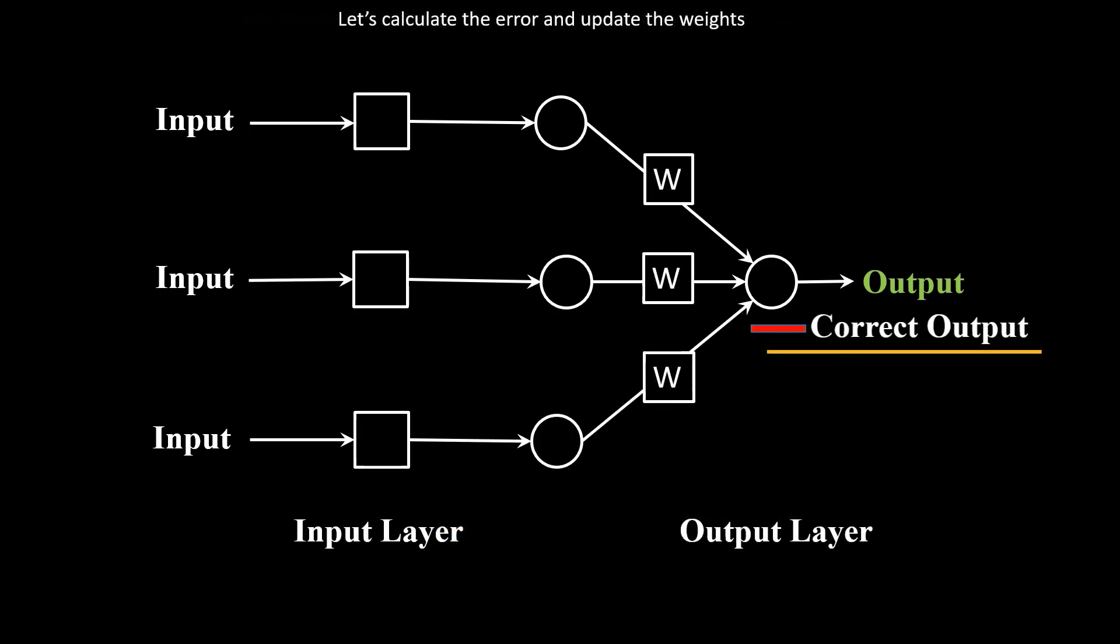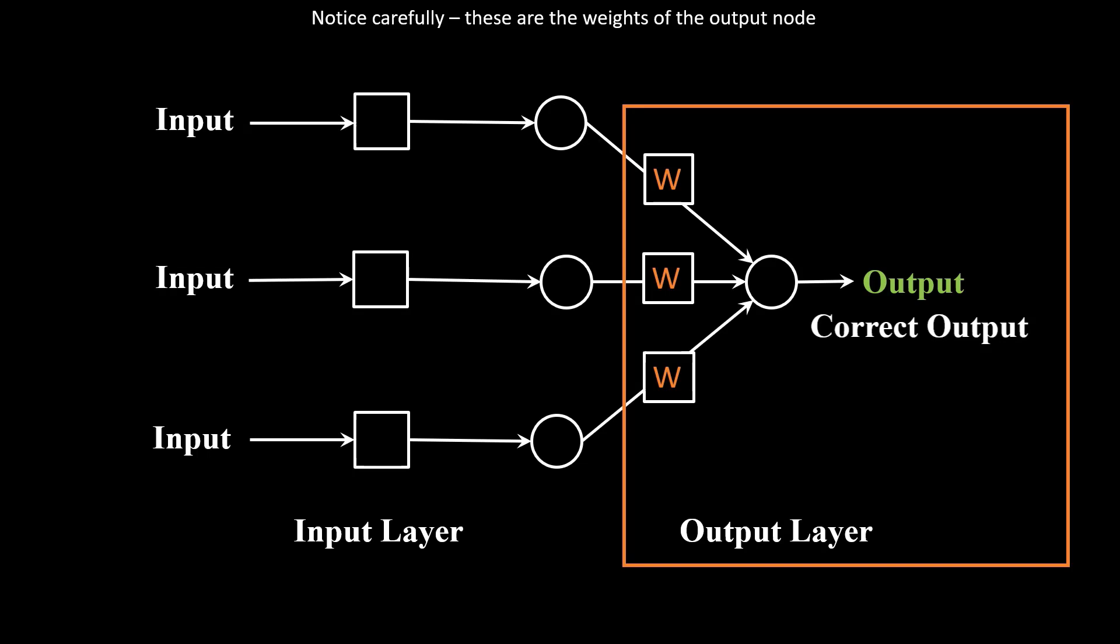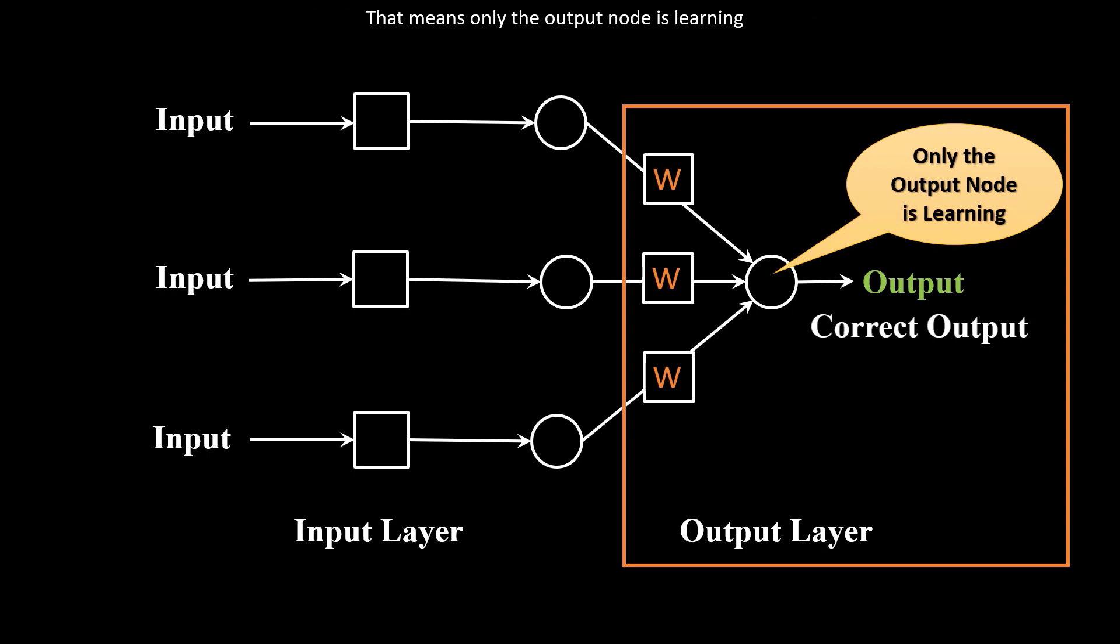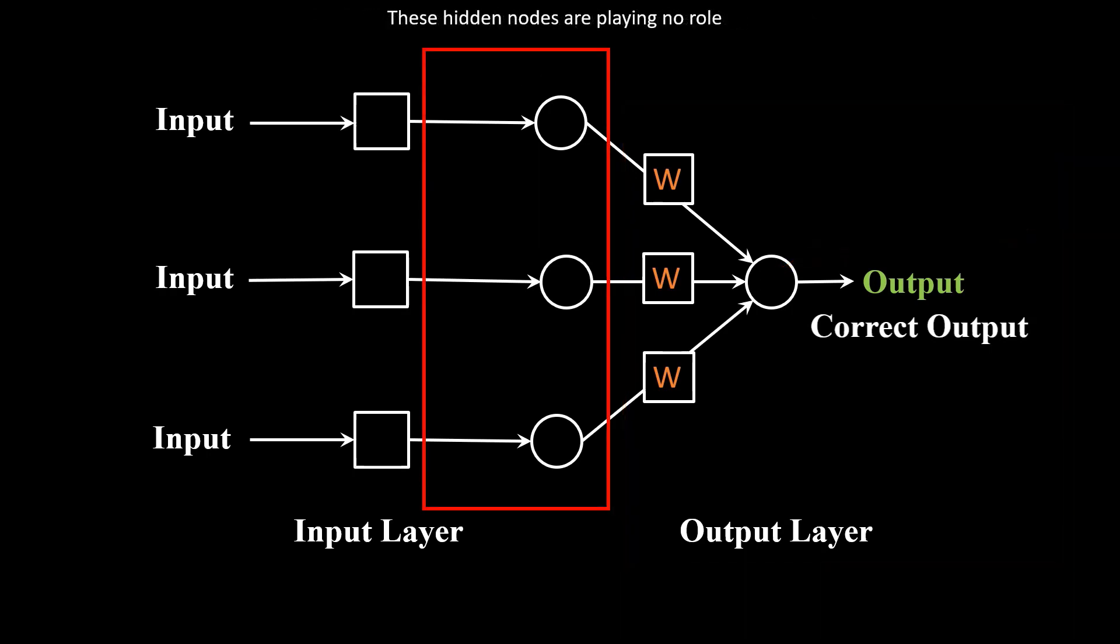Let's calculate the error and update the weights. Notice carefully, these are the weights of the output node. That means only the output node is learning. These hidden nodes are playing no role here.